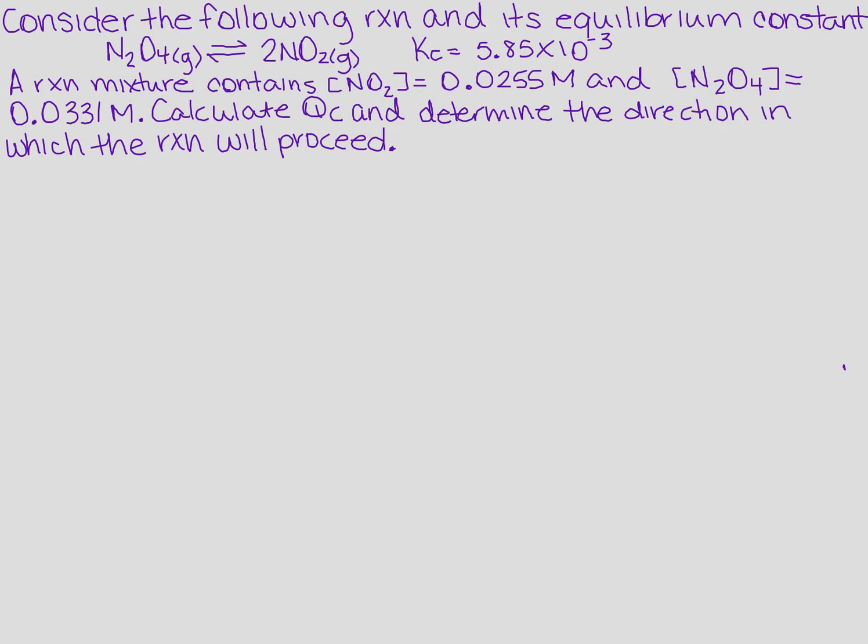So if you recall, Q sub C is calculated the same way as K sub C. Q sub C is going to be equal to the products, so the concentration of the products. I've got a 2 in front so that becomes a squared over the concentration of N2O4, and it's not raised to anything because there's no coefficient.